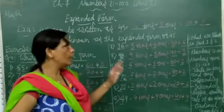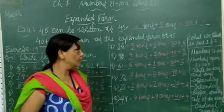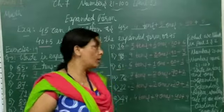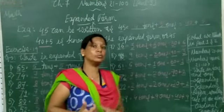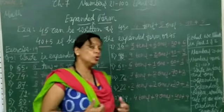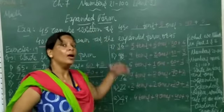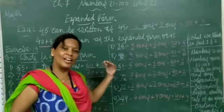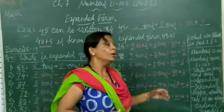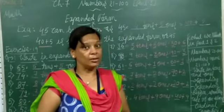Okay students, you have already learned numbers 21 to 100 — number names 21 to 100, writing in 10s and 1s, ascending order, descending order, bigger number, smaller number, greater than, less than, equal to, use of abacus, ordinal number, and also expanded form. If you have any query in expanded form, we will all meet in the online session.